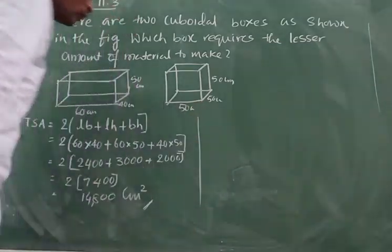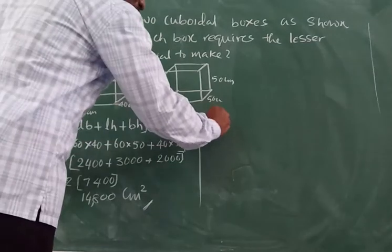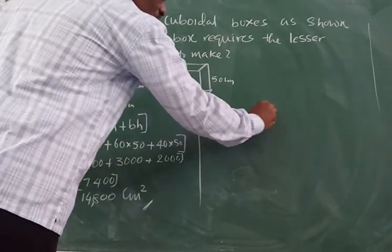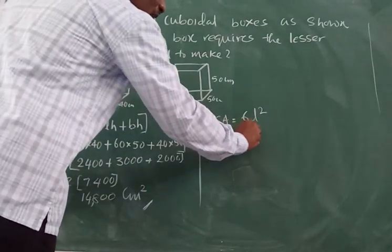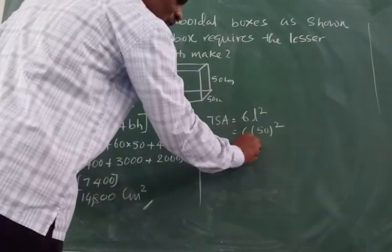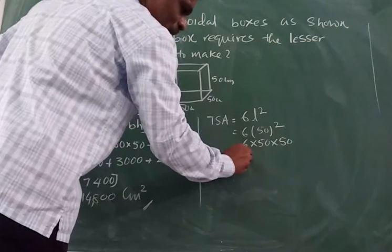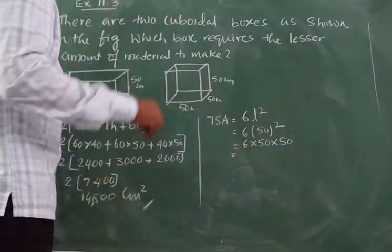Now let us come to this cube. So surface area, total surface of the cube. What is the formula to find the total surface area of cube? 6 L square. 6 L square, because there are 6 faces, square in shape. All the faces are square in shape. So now 6 into L square, L square means 50 square. So 6 into 50 into 50.